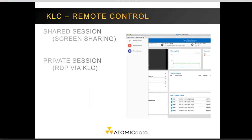Kaseya LiveConnect also includes Kaseya Remote Control. There are two methods of launching remote control: one is using a shared session, which uses screen-sharing technology similar to VNC, or a private session, which uses RDP over the Kaseya LiveConnect tunnel. Note that the private session requires RDP to be enabled on the server or workstation you're trying to access.